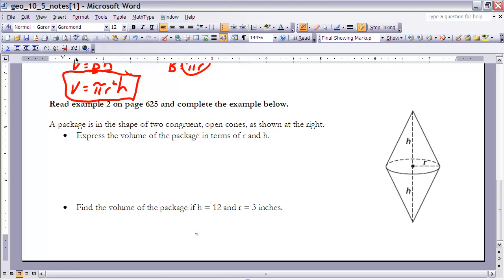I know in general, the volume of a cone is equal to one-third its base times its height. Well, there's two cones, and they both have the exact same base, and they both have the exact same height. So if I take that value that we have there, and I double it, I can say the volume of this whole thing is two times this.